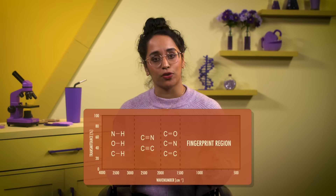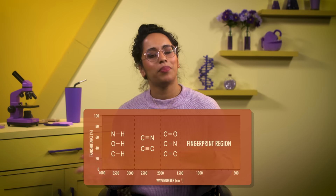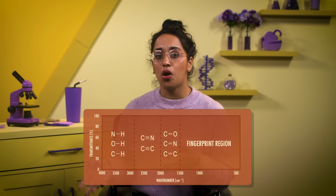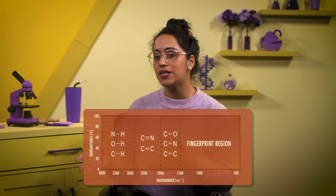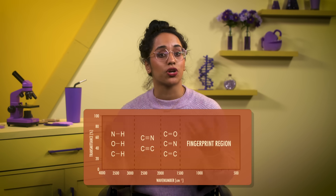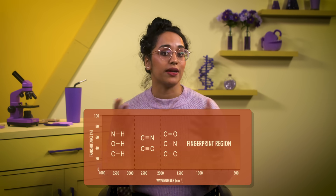Like mass spectra, there are libraries of IR spectra to help with identification. But even though it can be a little tedious, we want to be able to recognize different regions on an IR spectrum to make sure our data makes sense when compared to a library spectrum. And now that we're ready, we'll go back to our mystery substance.